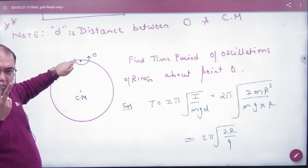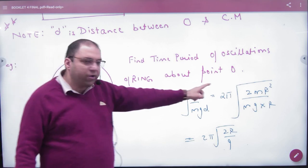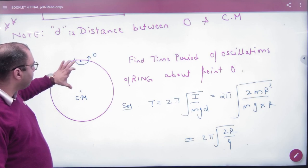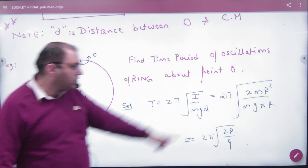Mr square plus Mr square to Mr square. So I is 2mr square. And D means distance between O and center, which is r. D is the answer.